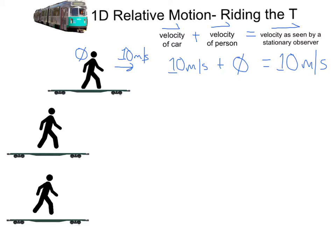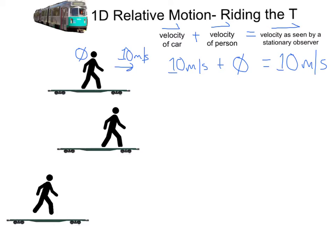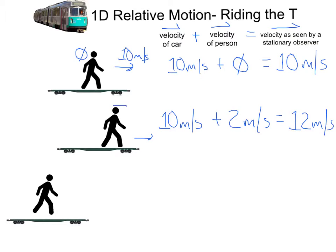What if you see your stop and start walking towards the front of the car? The car is moving at 10 meters per second, and you start to walk at 2 meters per second in the same direction as the car. You now see some relative motion of that person walking. The velocity of the car was 10 meters per second, and if you're now walking towards the front at 2 meters per second, someone on the sidewalk would see you walking at 12 meters per second — the combined motion of the car moving at 10 and you moving at 2.